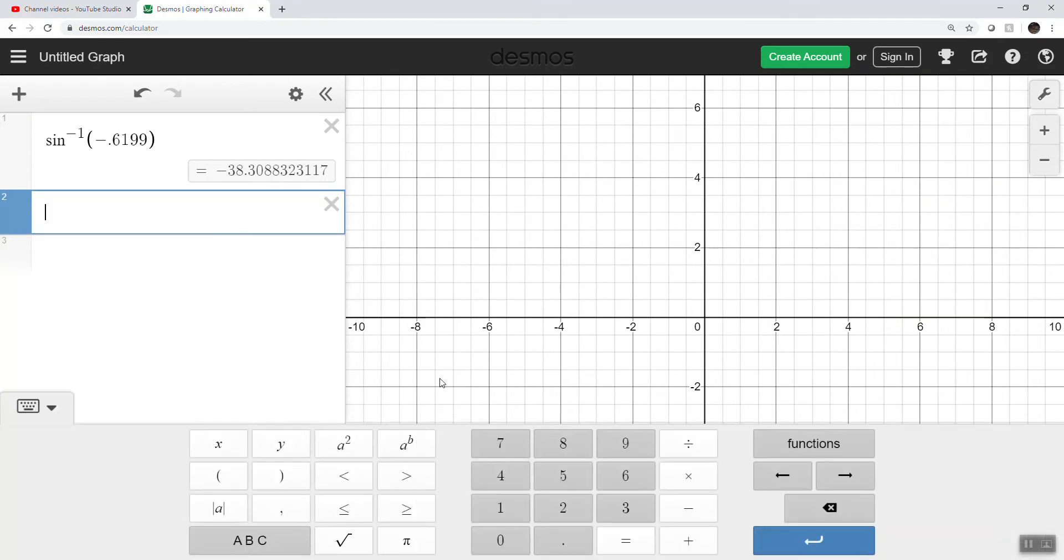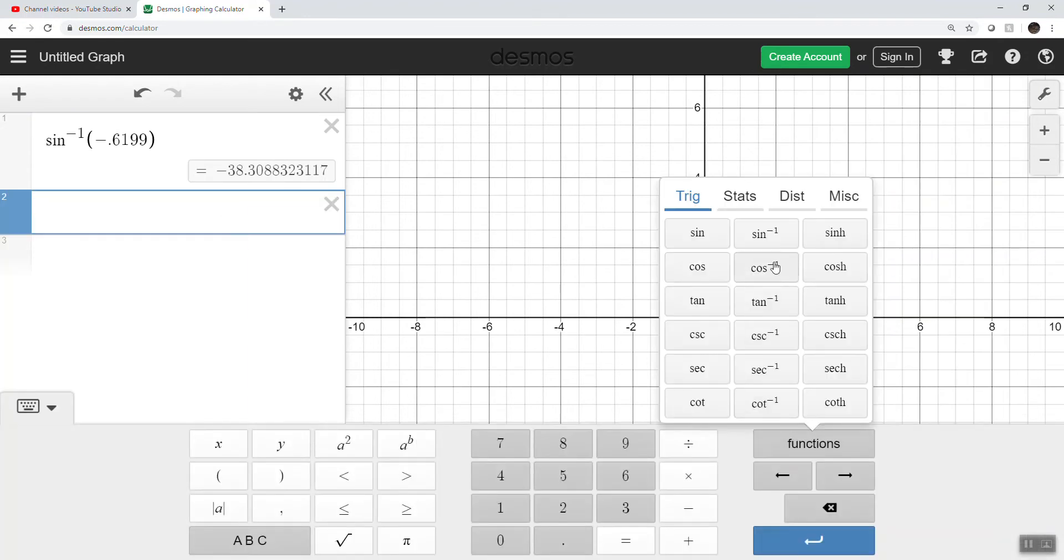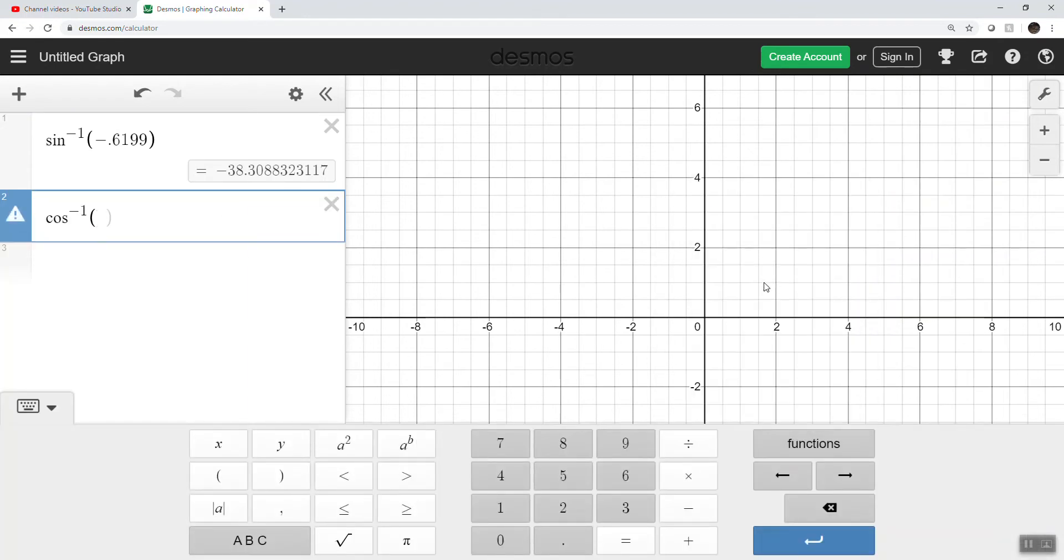I'll do the last one here, arc cosine, under functions, cosine, and we're going to do negative 0.9810. So there's our degrees. 168.813.